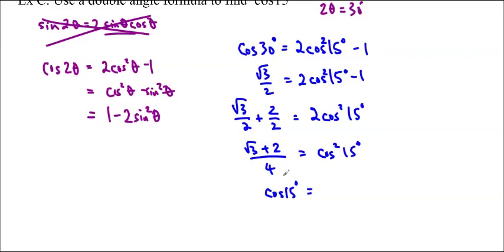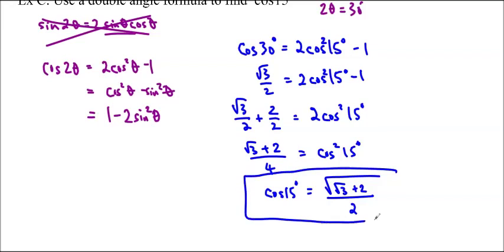So cos 15 degrees, and I know it has to be positive because it is in quadrant 1, is equal to the square root of root 3 plus 2 over the square root of 4, which is 2. So that's our answer. It's in a slightly different form, but they are the same solution. They'll give you the same number.